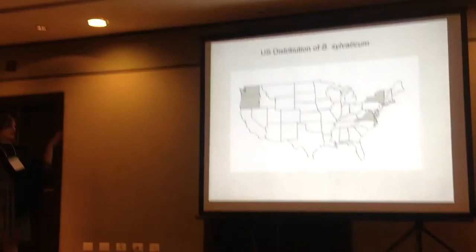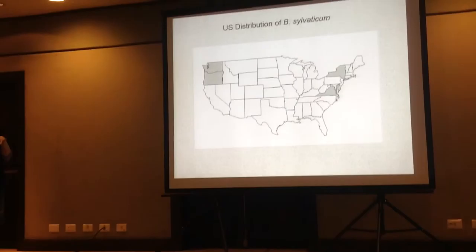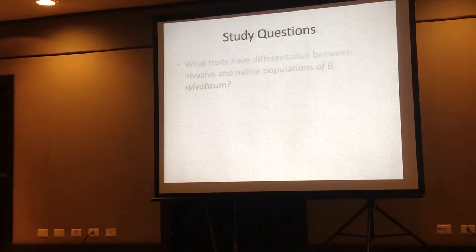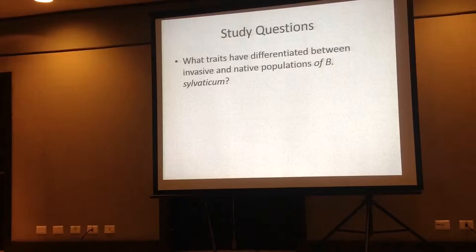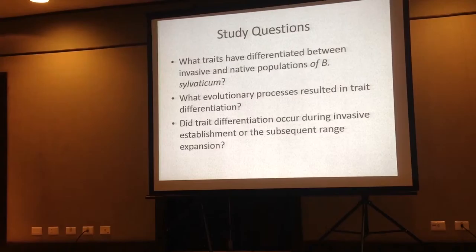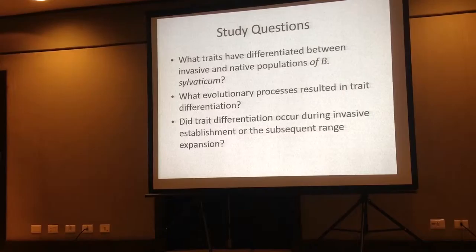Many of the original populations where it was first introduced remained dormant for a long period of time in their centralized regions in Oregon. It didn't become invasive until the end of the 20th century, when populations of Brachypodium sylvaticum rapidly spread throughout central Oregon. Now it's distributed in Oregon, Washington, and on the east coast of the U.S. in New York and Virginia. My study questions were: what traits have differentiated between invasive and native populations, what underlying evolutionary processes resulted in trait differentiation, and whether trait differentiation occurred during invasive establishment or after subsequent range expansion.